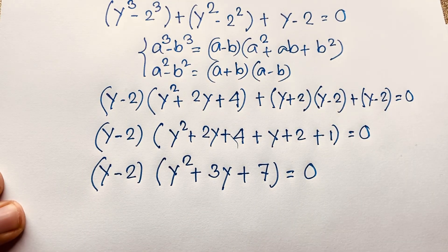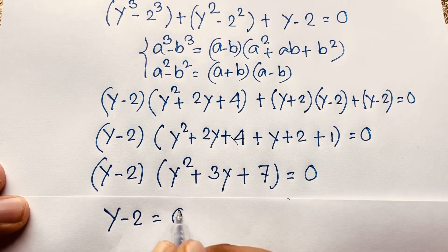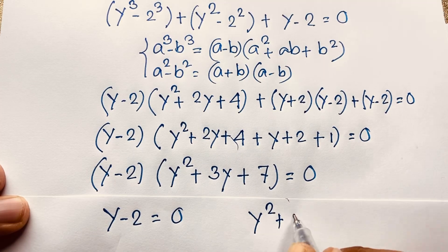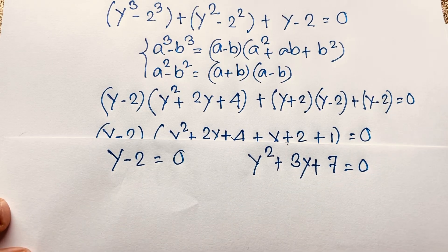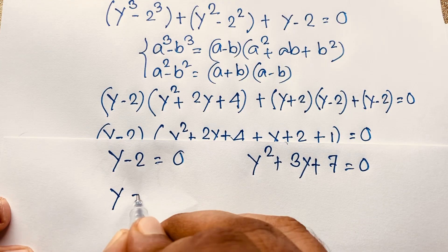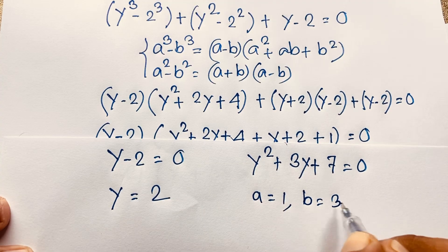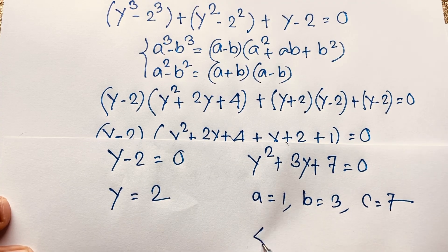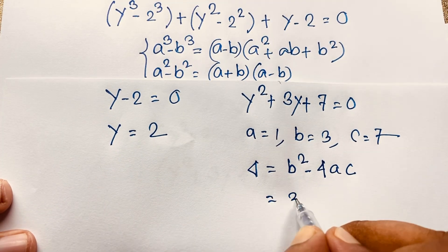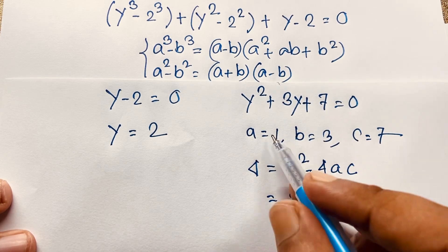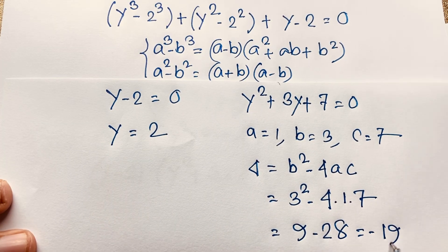We now find two cases. Case 1: y - 2 = 0. Case 2: y² + 3y + 7 = 0. For Case 2, using the discriminant with a = 1, b = 3, c = 7: delta = b² - 4ac = 3² - 4(1)(7) = 9 - 28 = -19.